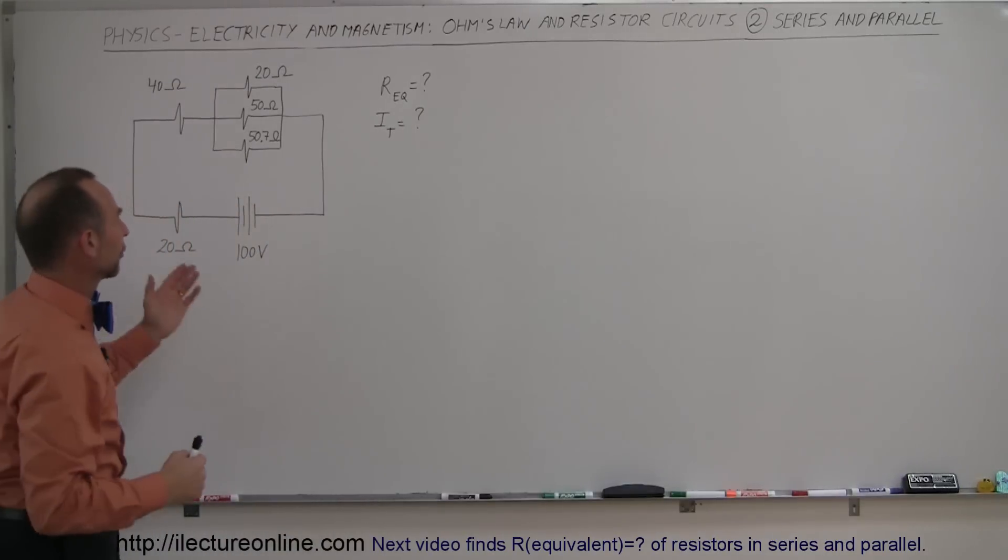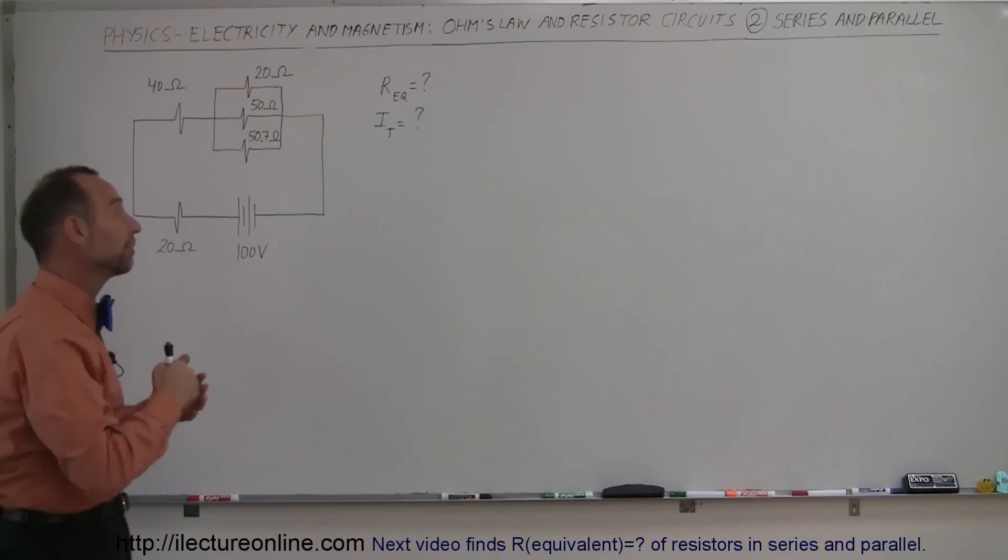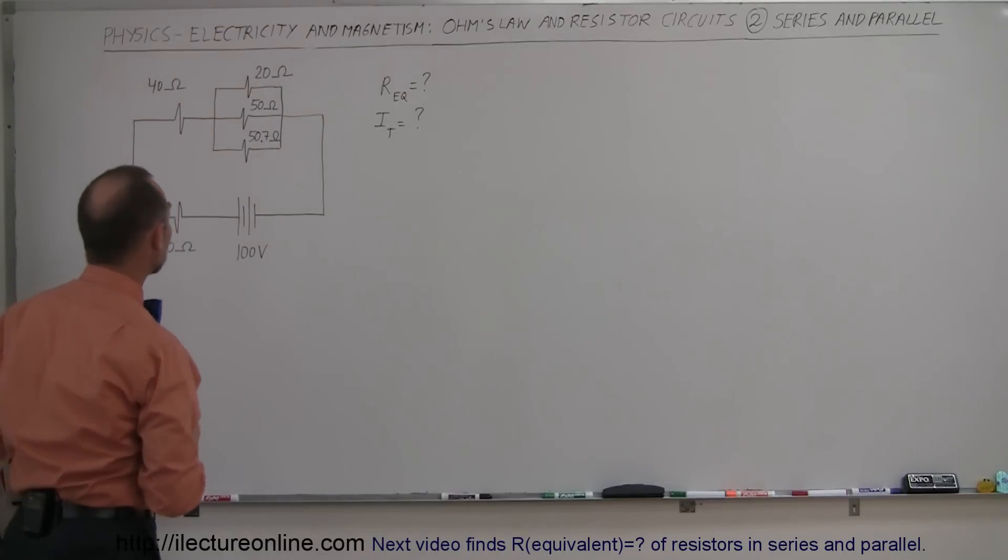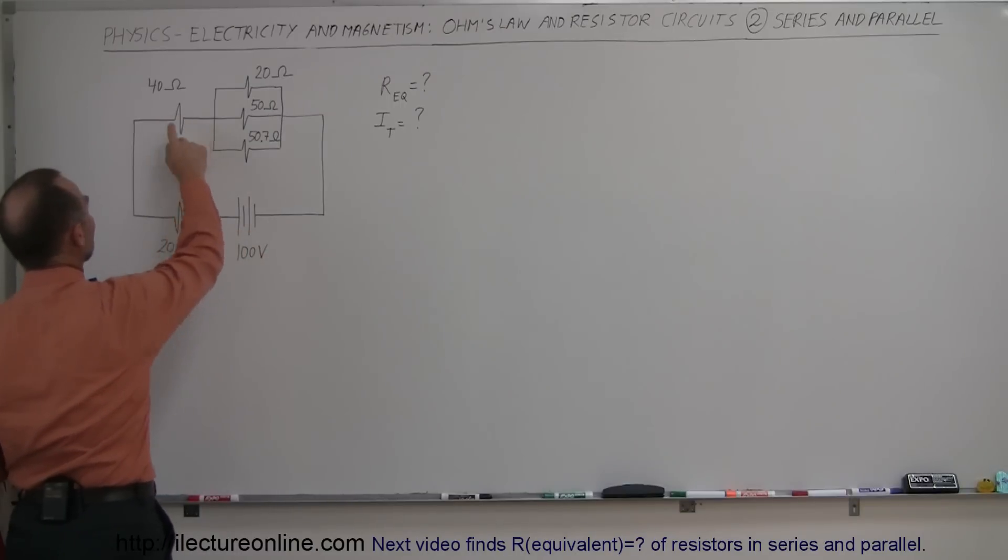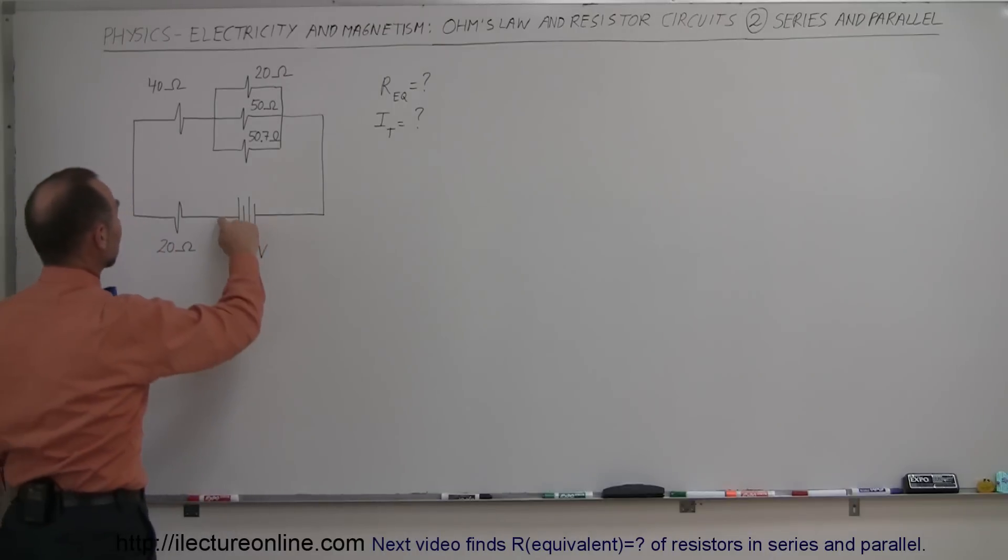So we're not going to find the current in each individual branch. If you want to know how to do that, go to the previous video. But here we have a circuit and notice that we have two resistors that are in series. The way we can know they're in series is because any current coming from the battery going through the circuit has to go through this resistor and must go through this resistor in order to get back to the battery.